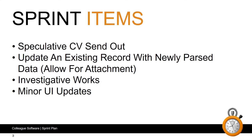Looking at the high-level items and to explain further, we're looking to introduce a new tab to the candidate, contact and company records that will list instances when a candidate has been speculatively sent. Included within this functionality will be the option to create a requirement should the contact be interested in considering the candidate for a position. As part of the last sprint we introduced a process for updating existing records via the parser, and in this sprint we'll be adding to that with the option to attach the parsed document.